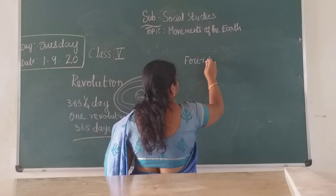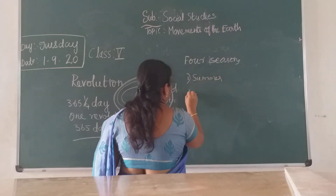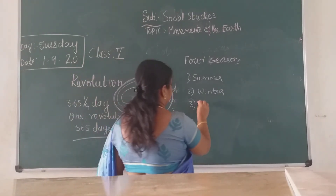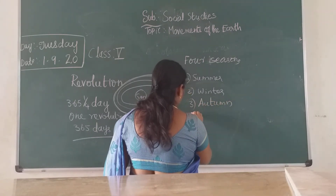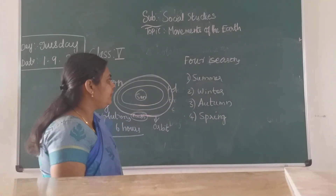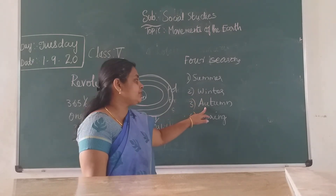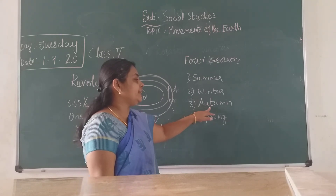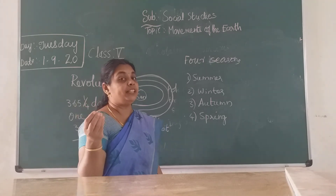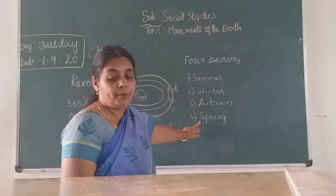The four seasons are: summer, winter, autumn, and spring. Summer is very hot; winter is cold. In autumn, leaves fall from the trees. In spring, new leaves start coming from the trees. We celebrate our festivals depending on these seasons.